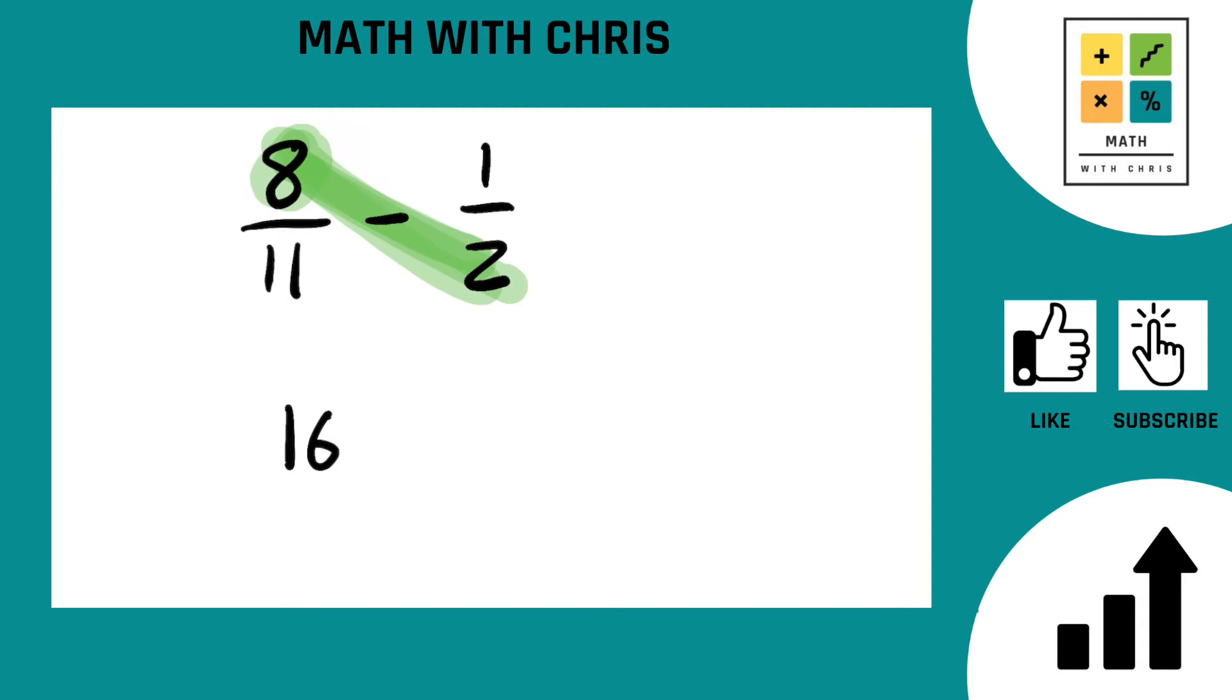Now we're going to cross multiply the other way. Start with that 11. Cross them up there. 11 times 1 is 11. And because of the subtraction problem we've got to put a minus in between.